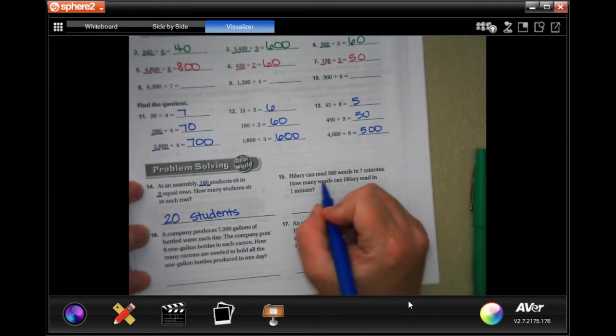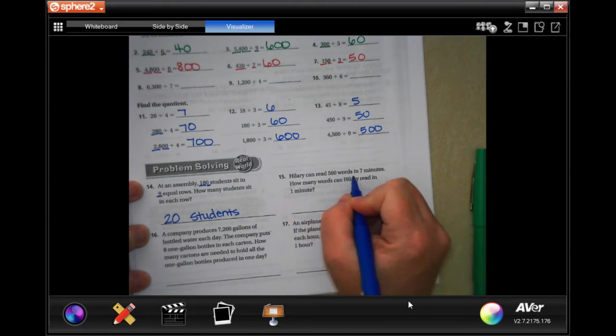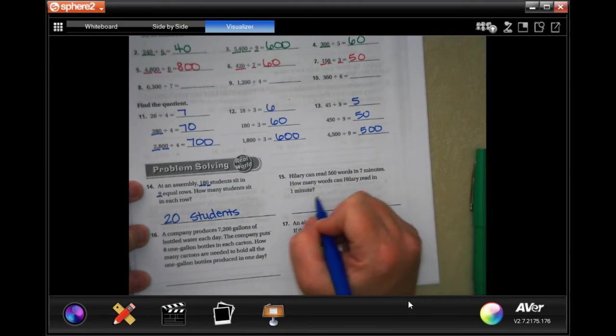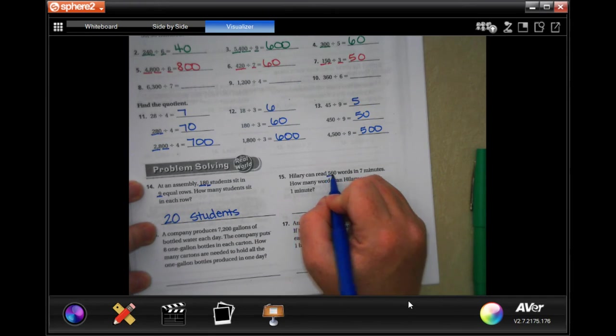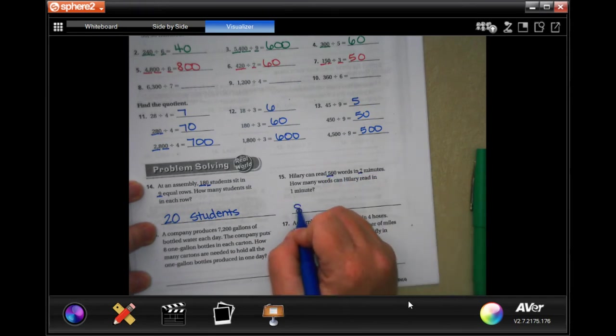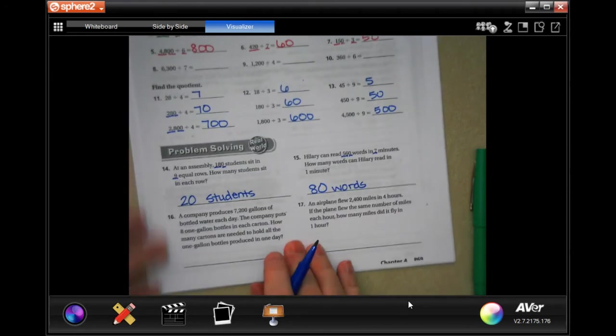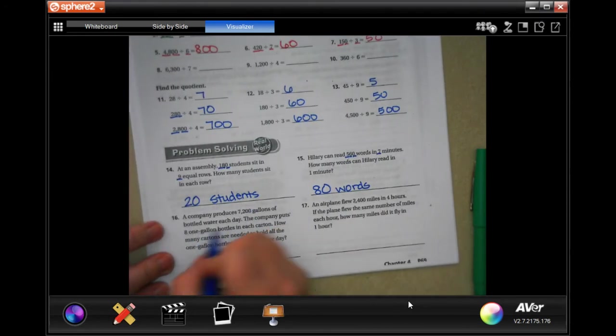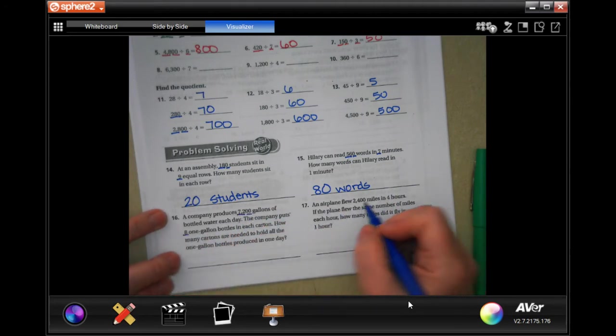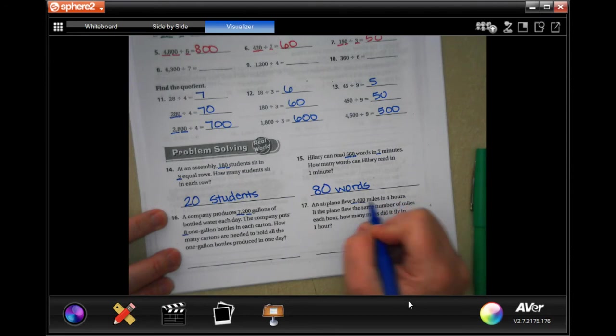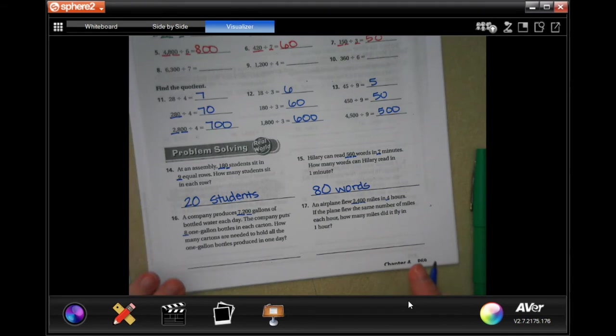Hillary can read five hundred and sixty words in seven minutes. How many words can she read in one minute? Well, fifty six divided by seven is eight, add that other zero on there, eighty words. You guys do sixteen and seventeen, you totally can. You're gonna do the same exact thing.